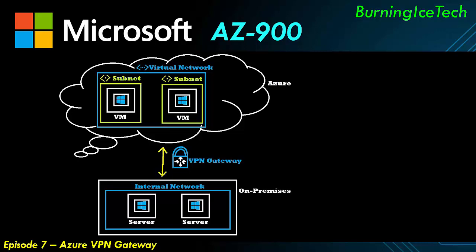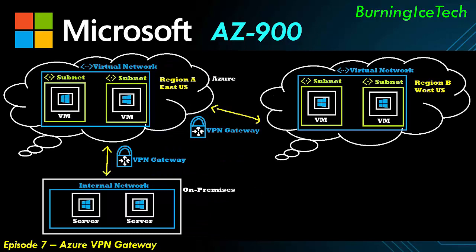Something you can also do is connect between different regions — cross-regional communications. You can see here I've got one region on the left, which I refer to as Region A, that's in the East US. Then I've got a second region on the right, referred to as Region B, which is in the West US. Obviously this is not limited to the East US and West US — I just use those as examples; this could be between any two regions. So if you've got components in two different regions and you'd like them to communicate with one another, this is how you can get it done. It's not the only way — you can also use peering and other solutions — but this is probably the most common way.